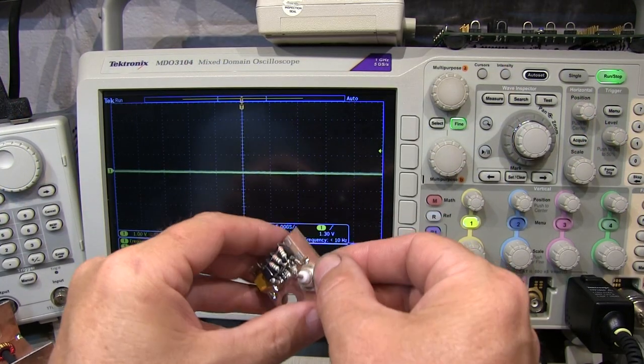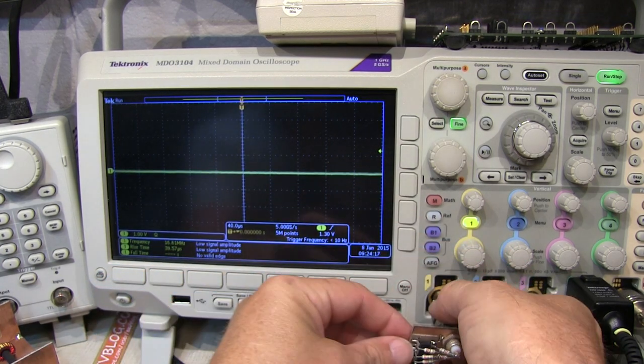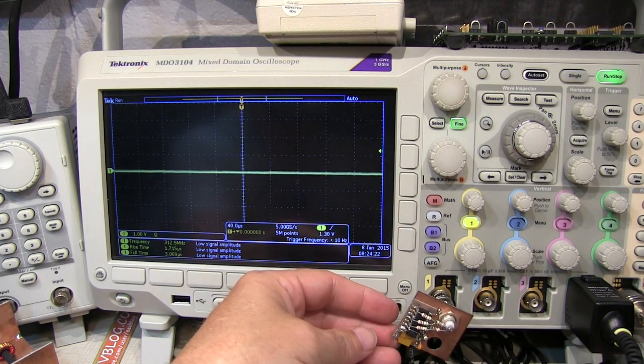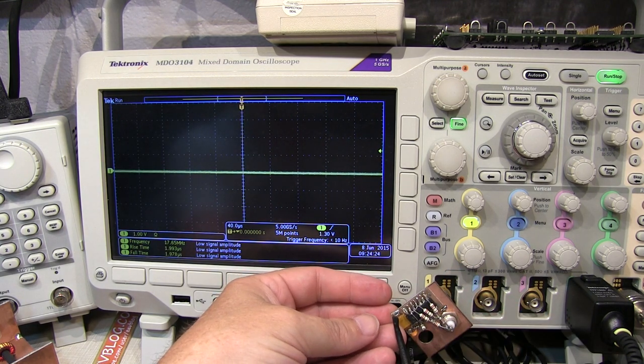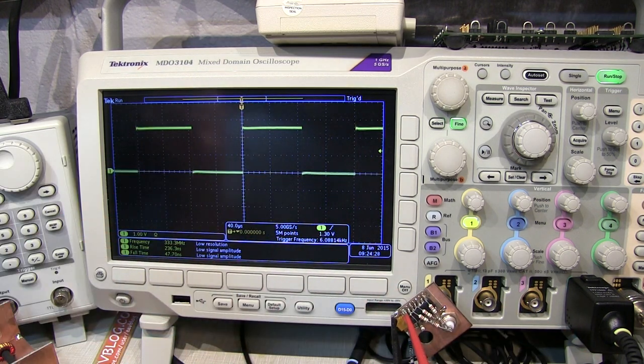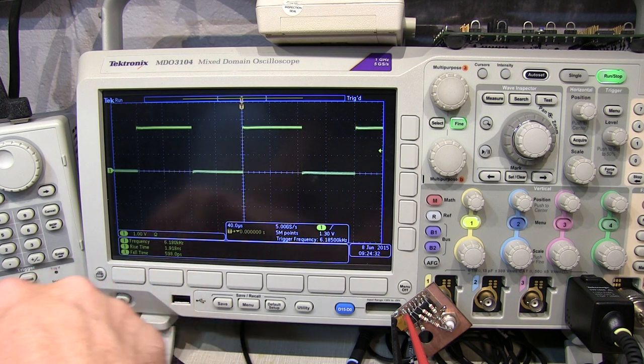All right, so let's start by looking at my little hand-built prototype here. Connect up a BNC to hook into channel 1. I've got channel 1 set to a 50-ohm internal termination. We'll hook up the power supply here and turn on the power.